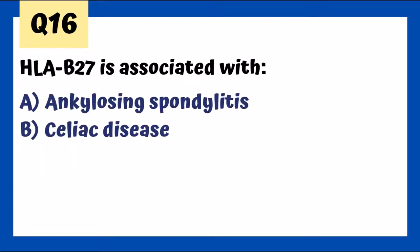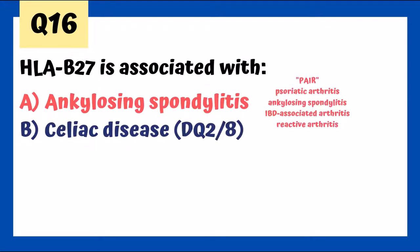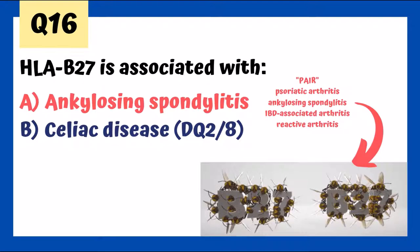HLA-B27 is associated with ankylosing spondylitis, and there are actually four conditions — the PAIR conditions: Psoriatic arthritis, Ankylosing spondylitis, IBD-associated arthritis, and Reactive arthritis. The mnemonic uses a pair of B's around B27 to remind us of these four conditions associated with HLA-B27.